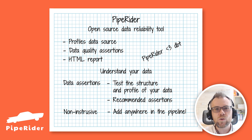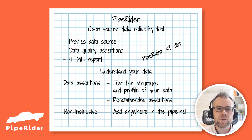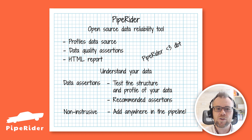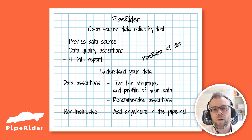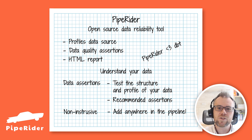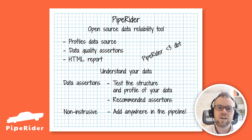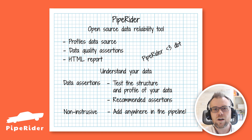Currently SQLite, Postgres, Snowflake, and DBT are supported. You just need to provide the login details when you initialize your project, and if you're using DBT then PipeRider will automatically detect the data source settings from your DBT profiles. Ease of use really is one of the core concepts of PipeRider.